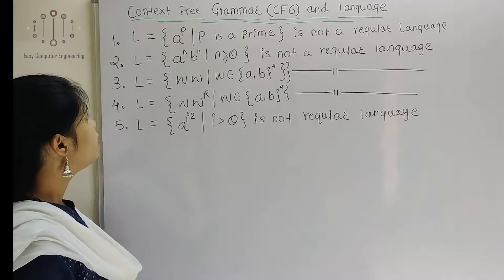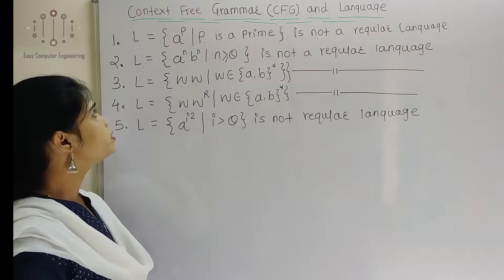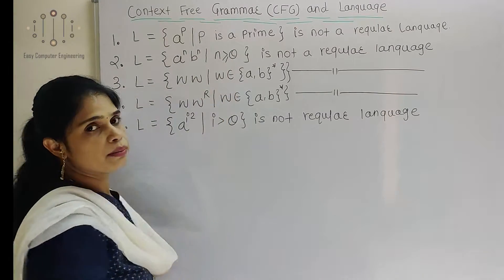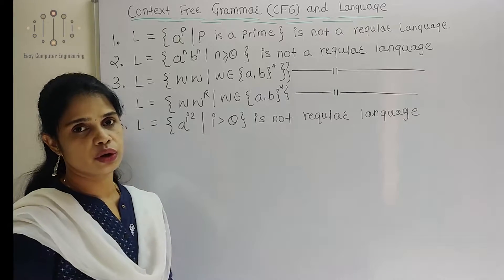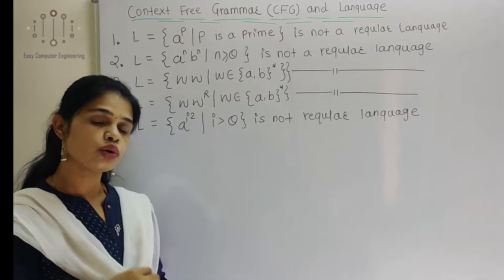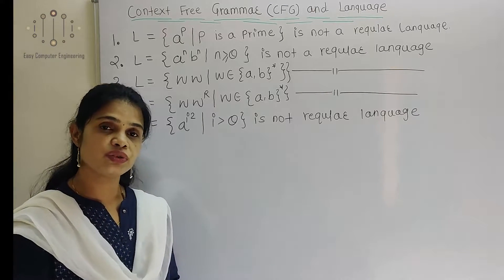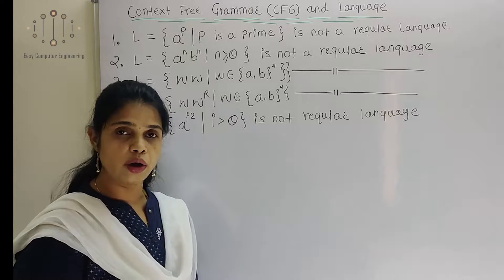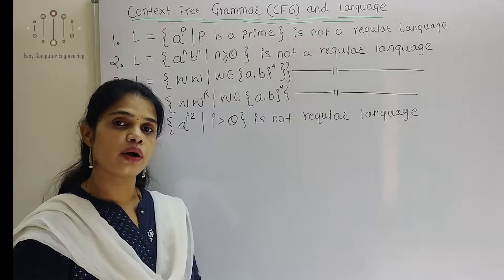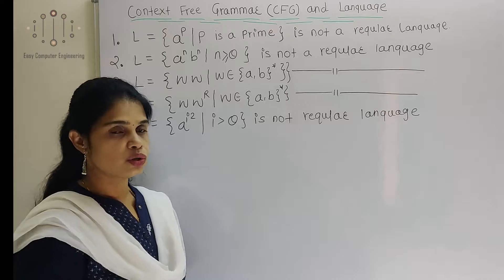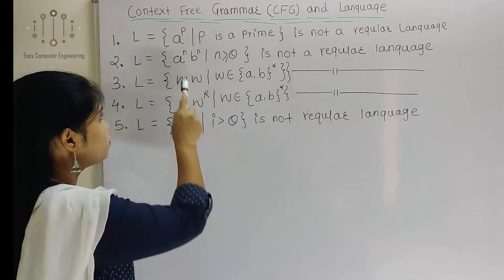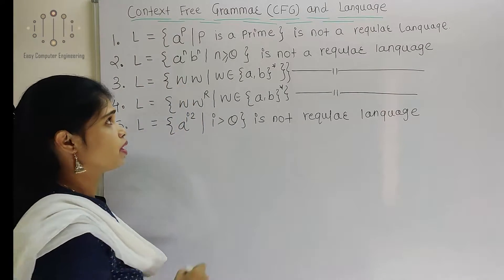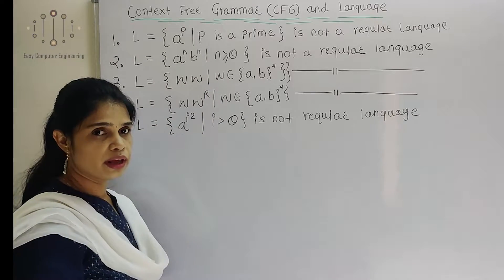The first example is L equals A to the power P, where P is a prime number. This language is not a regular language. Those languages which we can represent with the help of finite automata or regular expressions are called regular languages. This language we cannot represent with the help of finite automata, so this is not a regular language.